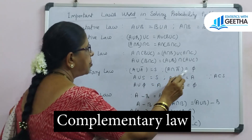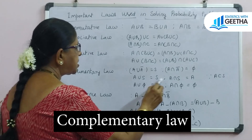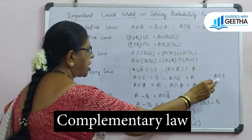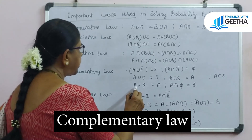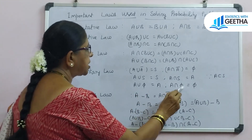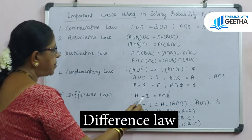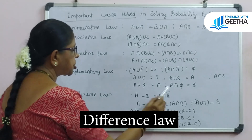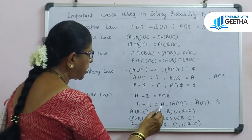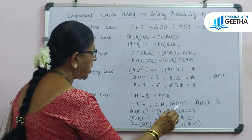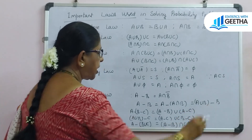Complementary law: A union A complement equals S (the sample space); A intersection A complement equals the empty set; A union S equals S; A intersection S equals A, because A is a subset of the sample space. Also A union empty set equals A; A intersection empty set equals empty set. Difference law: A minus B equals A intersection B complement; A minus B can also be written as A minus (A intersection B), which equals (A union B) minus B.